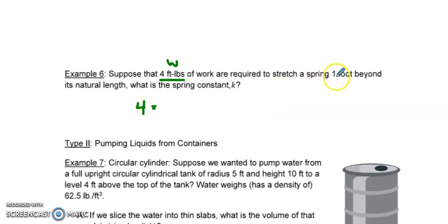And we're stretching the spring one foot beyond its natural length. So that means we're integrating from zero to one. They want to know the spring constant. That's k. So basically, we set up this integral, and we're going to solve for k.